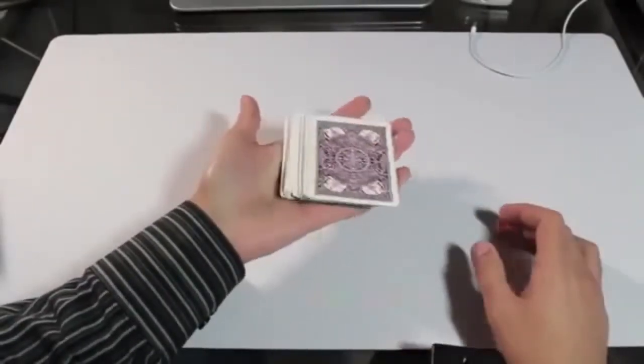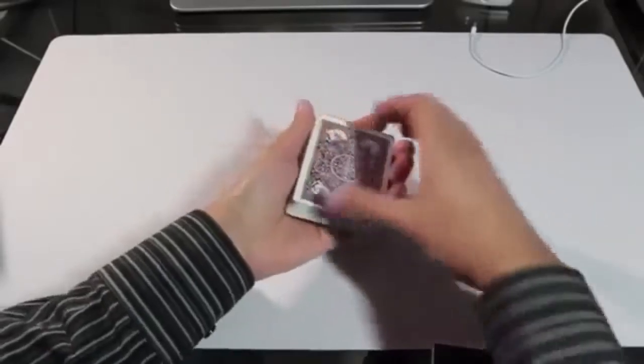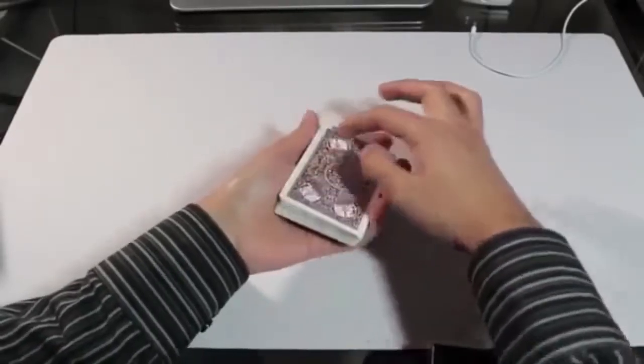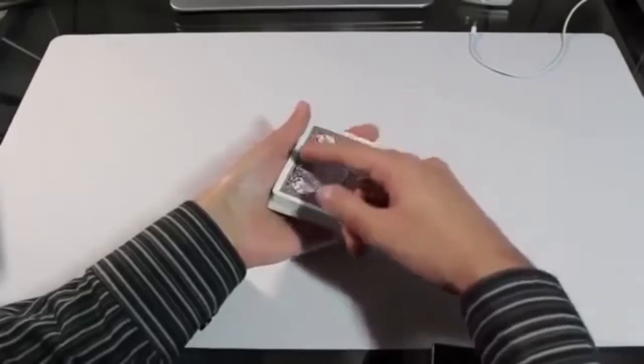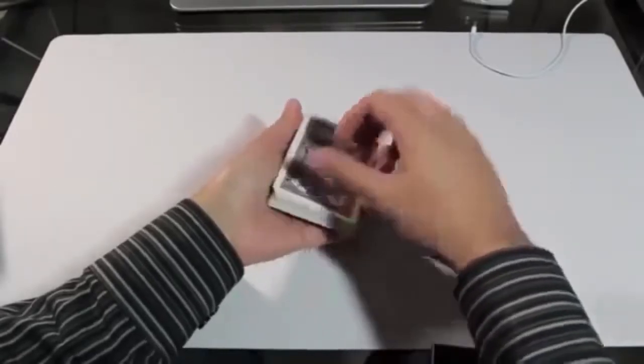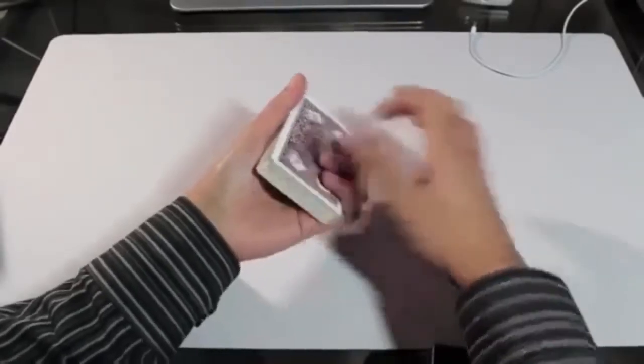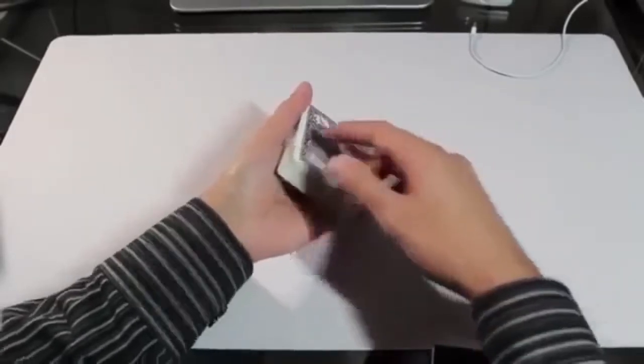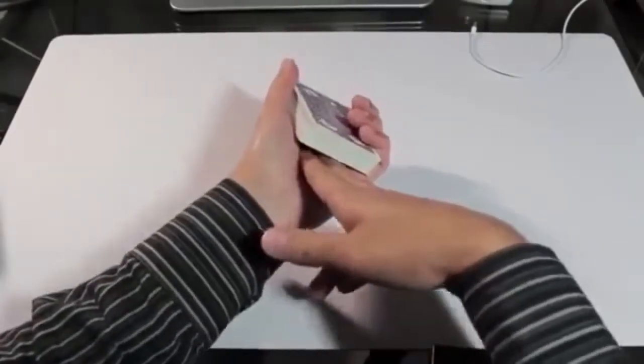Normally the pack is laying flat on your palm. Well in the top shot grip you need to change it so that the left edge of the cards is resting more so on the base of your thumb. Kind of like this. And you'll notice that when you do that you now have some space underneath the pack.